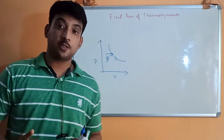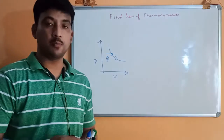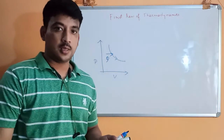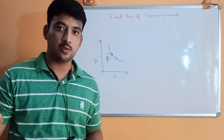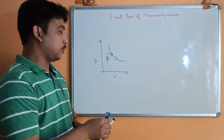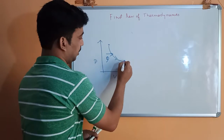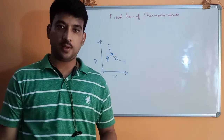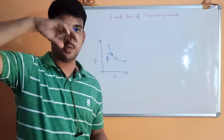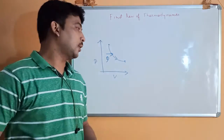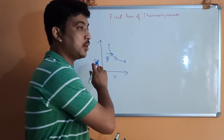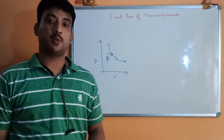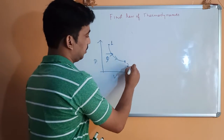The first law of thermodynamics for a process: in a cycle, whatever heat is transferred is equal to the change in work done. But in the case of a process, a change in state is occurring — the system is going from one state to another state. In a cycle, the initial and final states are the same, but here the properties will be different. Suppose this is point 1 and point 2.